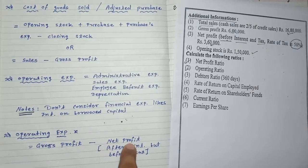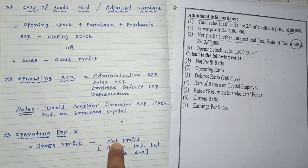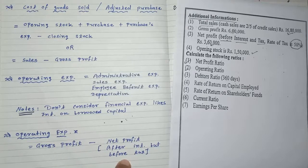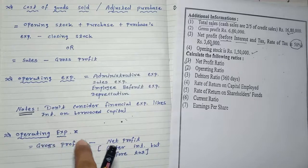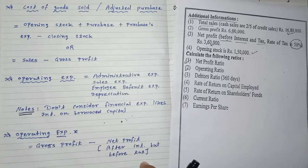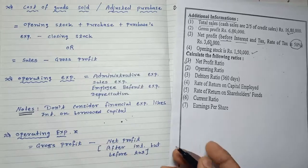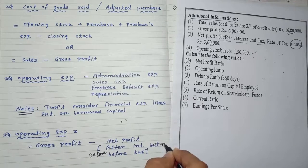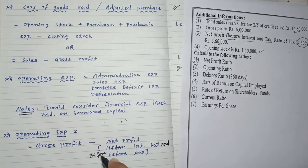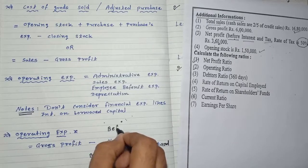There is also a formula for operating expense: gross profit minus net profit. But which net profit to consider? Previously the rule was to use net profit after interest but before tax. However, last year the rules were changed — now we consider net profit before interest and tax for this calculation.